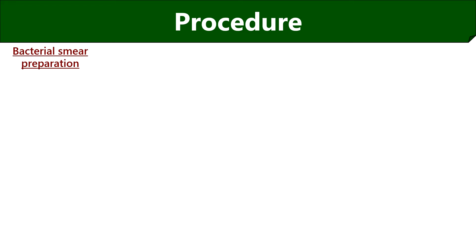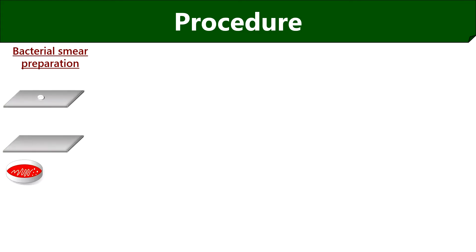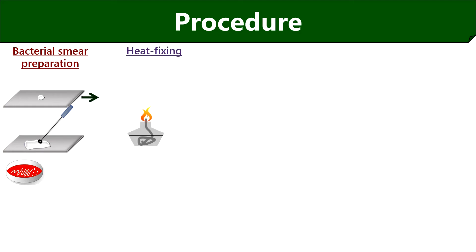Now we will discuss the procedure of acid fast staining. To prepare the bacterial smear, first take a clean glass slide, then add a drop of water at the center. Take a little inoculum from the culture plate and mix it with the drop of water until a thin bacterial smear forms. Then heat fix the bacterial smear to the glass surface by moving the slide over the flame of the spirit lamp.